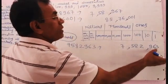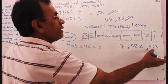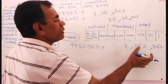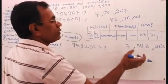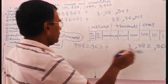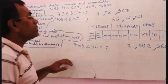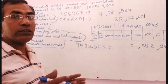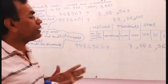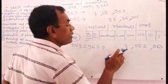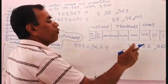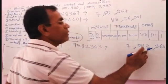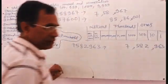Reading the place values: one, ten, hundred, one thousand, ten thousand, hundred thousand, million. So you can read this number according to the international place value chart as: seven million, five hundred eighty-two thousand, nine hundred sixty-three.